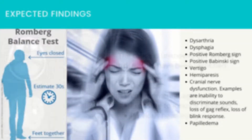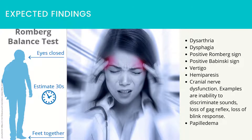Expected findings — physical assessment findings include: dysarthria, dysphagia, positive Romberg sign, positive Babinski sign, vertigo, hemiparesis, and cranial nerve dysfunction. Examples of cranial nerve dysfunction include inability to discriminate sounds, loss of gag reflex, loss of blink response, and papilledema.